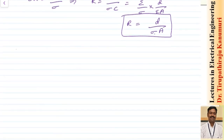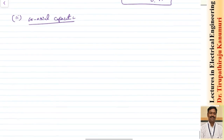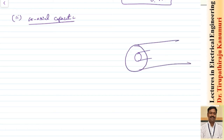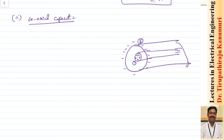Now let us look at the coaxial capacitor. The name itself tells us that both plates are along the axis — one plate is inside and one plate is outside, both elongated. The inside plate is numbered one and is charged positively; the outside plate is numbered two and carries negative charge. The inner plate has radius a, the outer plate has radius b, and the length of the capacitor is L. The permittivity epsilon fills the dielectric between them. This derivation also applies to the case of a coaxial cable.